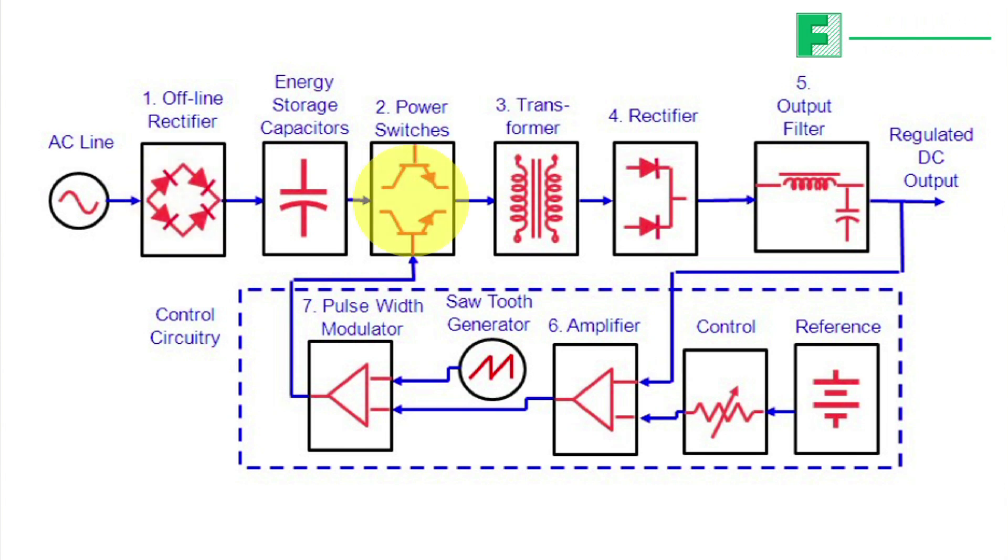Power transistors switching at tens to hundreds of kHz impose a high voltage, high frequency AC pulse waveform on the transformer primary. The AC pulse voltage is scaled by the transformer turns ratio to a value consistent with the required DC output voltage.